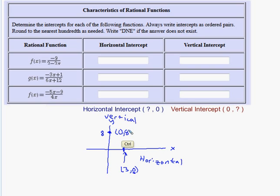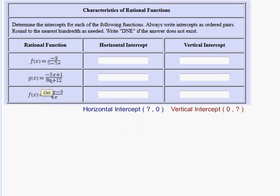So that being said, let me erase this, give myself some room. Let me try a couple of these problems. I'm going to start with g of x. So with g of x, starting with the horizontal intercept, I'm going to take g of x and set its output equal to zero. So if I was to write this down, negative 3x plus 1 over 6x plus 12, to find the horizontal intercept, I'm going to set the output equal to zero.